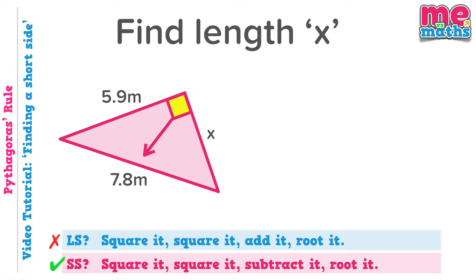So square it, square it, subtract it, root it. Let's start then by squaring both the sides we've been given. 7.8 squared is 60.84. And 5.9 squared is 34.81. Back to our rule.